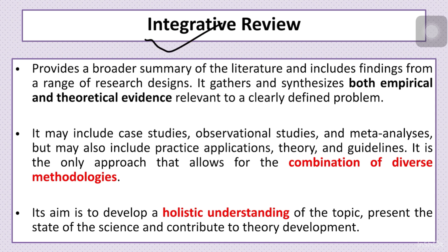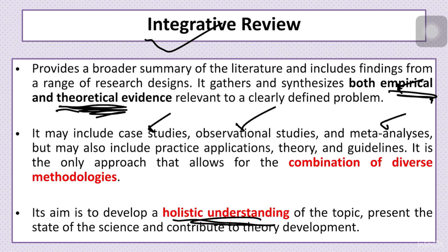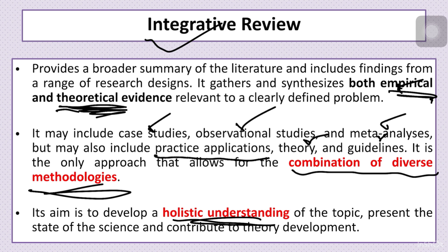The next type is the integrative literature review — a holistic review that covers both empirical and theoretical research. It synthesizes what empirical studies and theoretical work have provided. It is comprehensive and includes case studies, observational methods, meta-analysis, practice applications, theory, and guidelines. In short, whenever you summarize more than one kind of literature review, it is known as an integrative review.